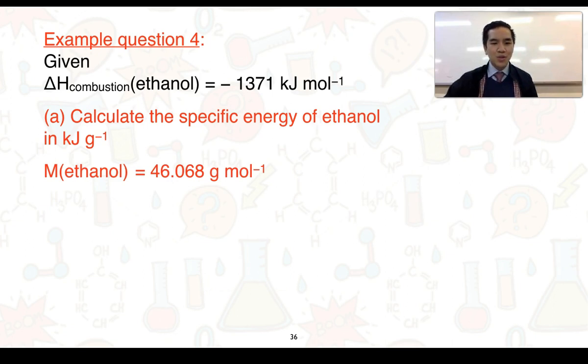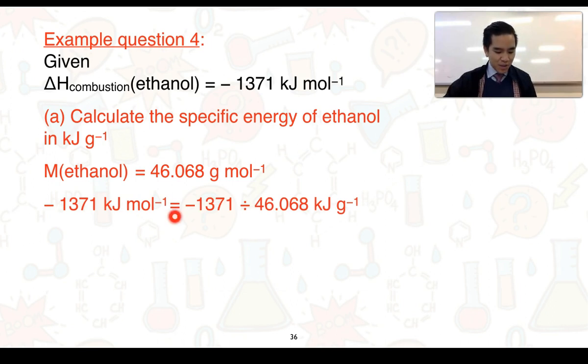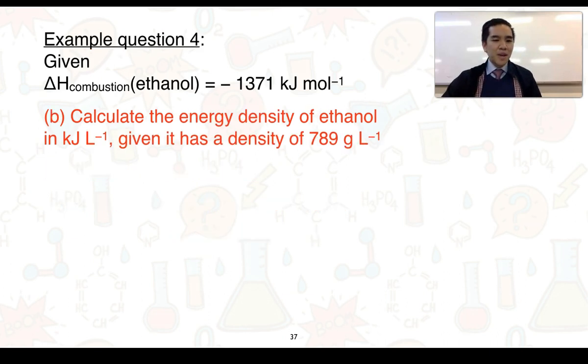To convert it from kilojoules per mole to kilojoules per gram we just need to divide by the molar mass. So that would be equal to −1371 divided by 46.068. This will give us an answer in kilojoules per gram and this ends up becoming −29.76 kilojoules per gram. In other words, for every gram of ethanol that is combusted it is releasing about 29.76 kilojoules worth of energy.